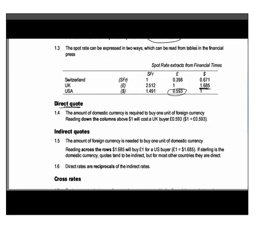For sterling quotations, quotes are usually indirect, while for other currencies they are often direct. These two rates are the reciprocals of each other — they express the same relationship different ways around. So one divided by 1.685 equals 0.593, which must follow: if 1.685 dollars equals one pound, then one dollar equals 0.593 pounds.